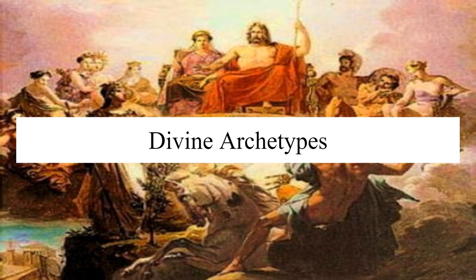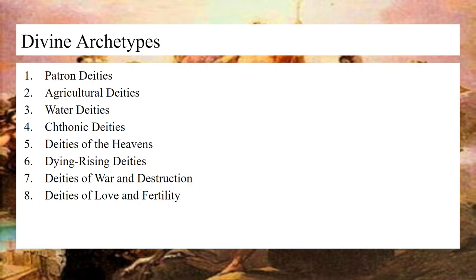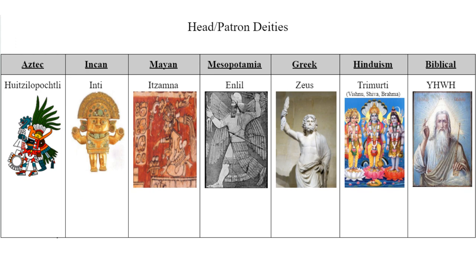Finally, we're going to look at Divine Archetypes, which include Patron Deities, Agricultural Deities, Water Deities, Chthonic or Underworld Deities, Deities of the Heaven, Dying Rising Deities, Deities of War and Destruction, and Deities of Fertility and Love. Patron or head deities are either the heads of the pantheon, the patrons of the state, or the creators of the universe. If they are specifically listed as heads, this takes precedent over state patrons, which change city to city, as well as the creator deity.